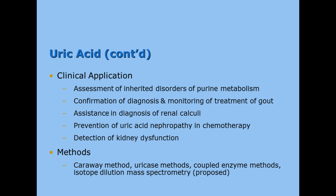Reasons we may order a uric acid test include: to assess inherited disorders of purine metabolism, confirmation of diagnosis and monitoring of gout, assistance in diagnosing renal calculi (kidney stones) and determining what caused them to help prevent more in the future, prevention of uric acid nephropathy in people undergoing chemotherapy for cancer, and detection of kidney dysfunction. If the kidneys aren't working, you may have an elevated uric acid in your bloodstream.